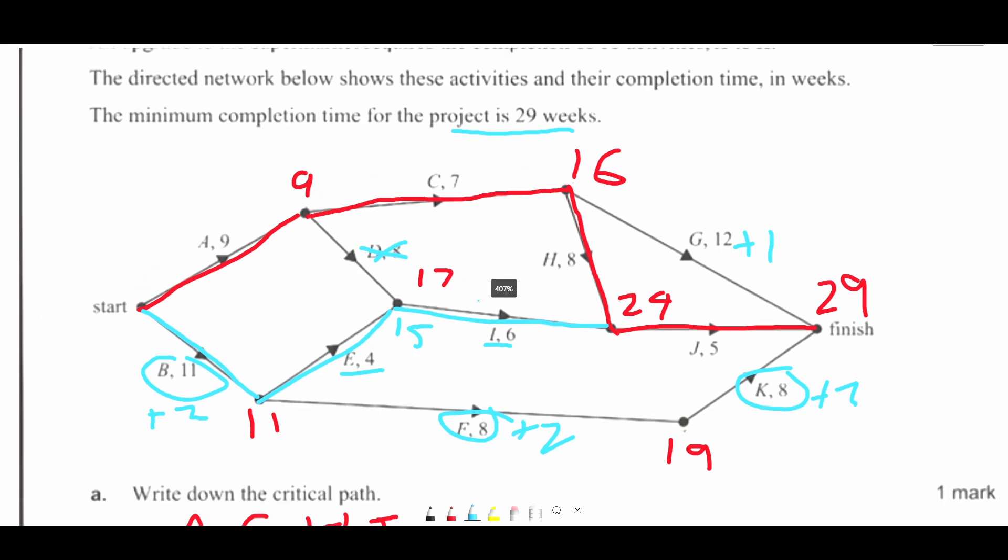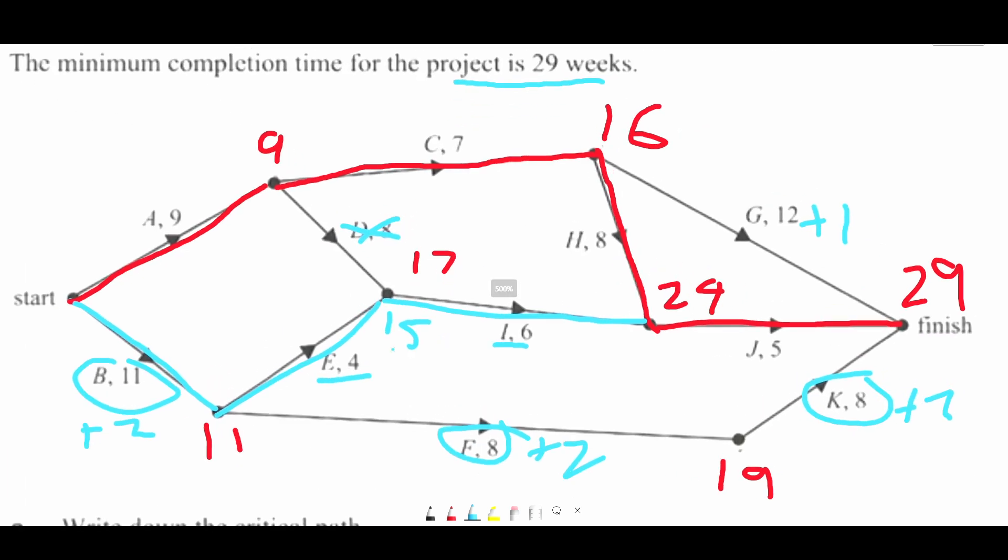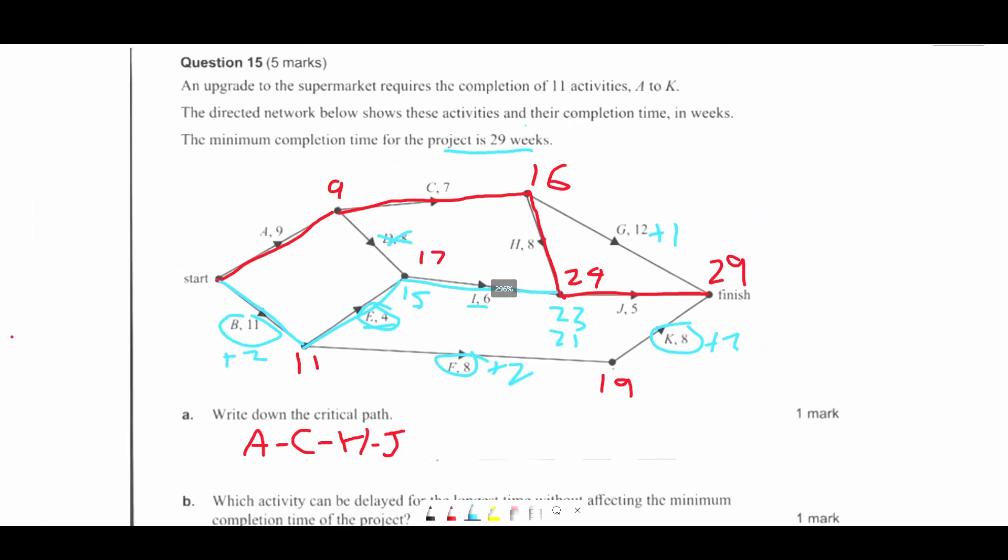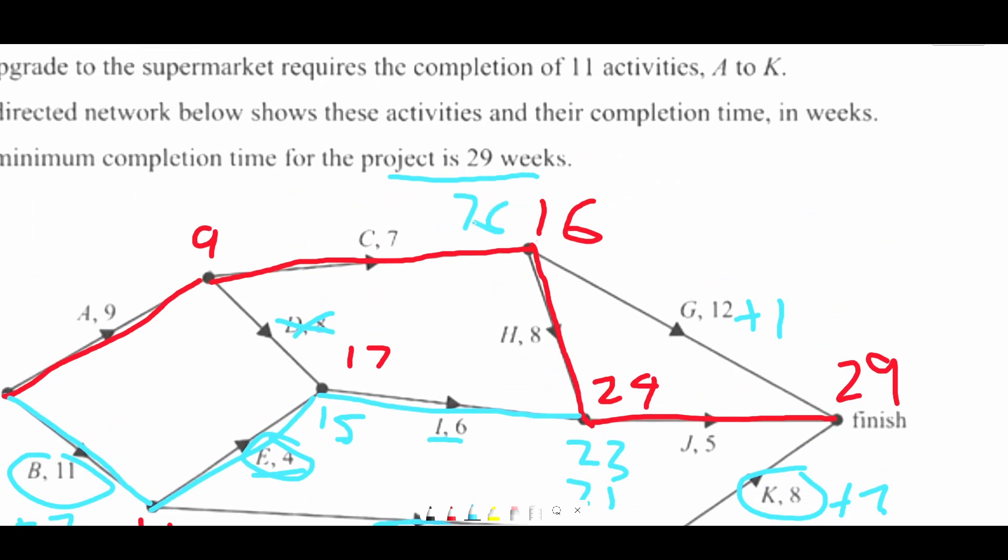So that's shorter than 17. So D is not an activity that can be floated. So 17 plus 6 is 23. But 11 plus 4 is 15. 15 plus 6 is 21. So that means E can be reduced by 3 weeks. Because that will give you a completion time of 26. But we have 29. So that's just E.